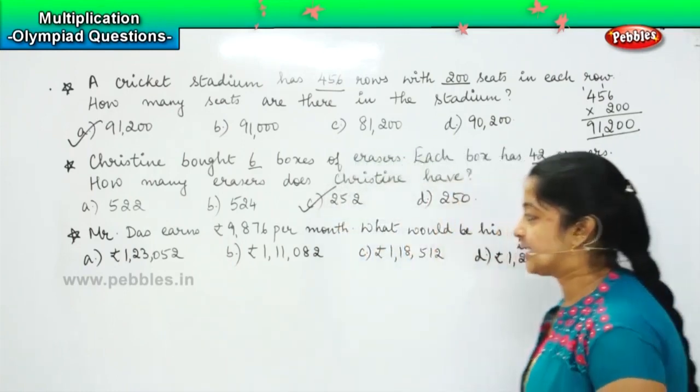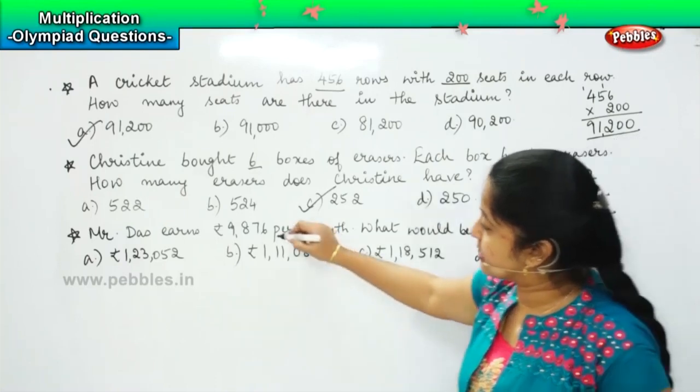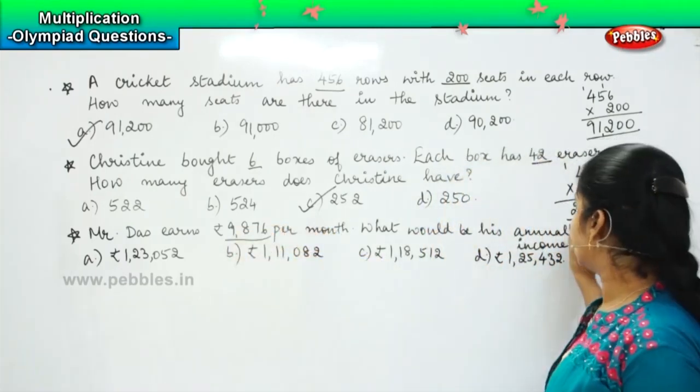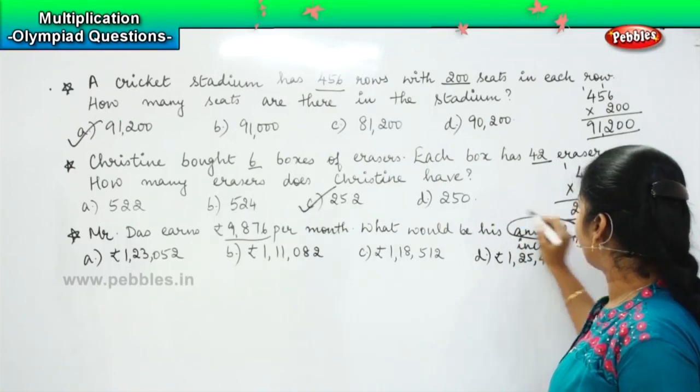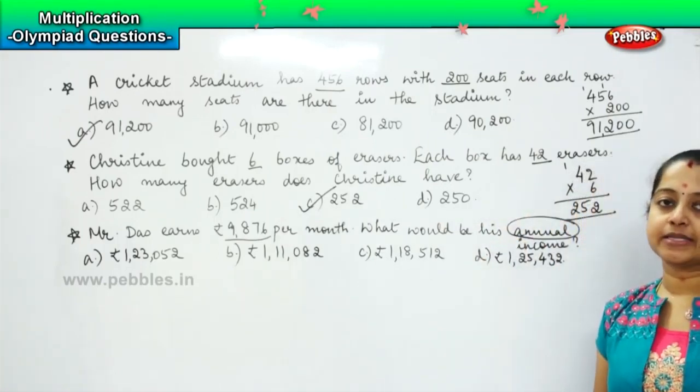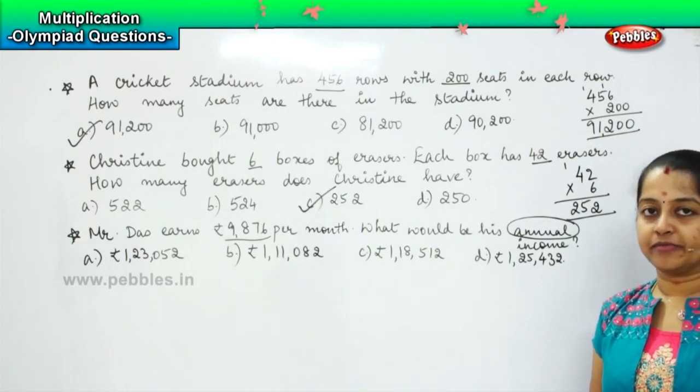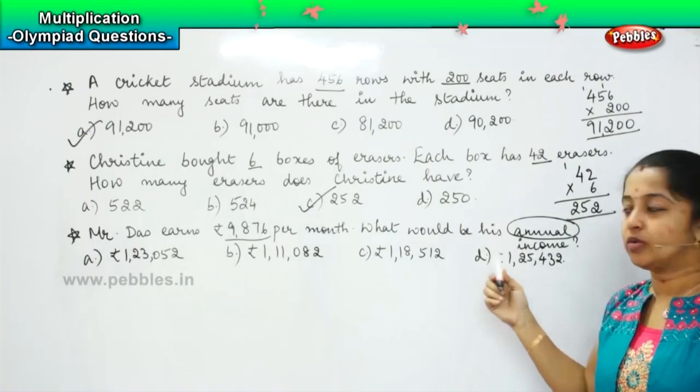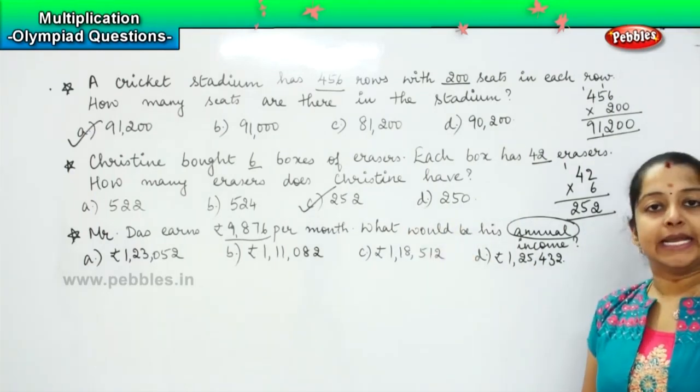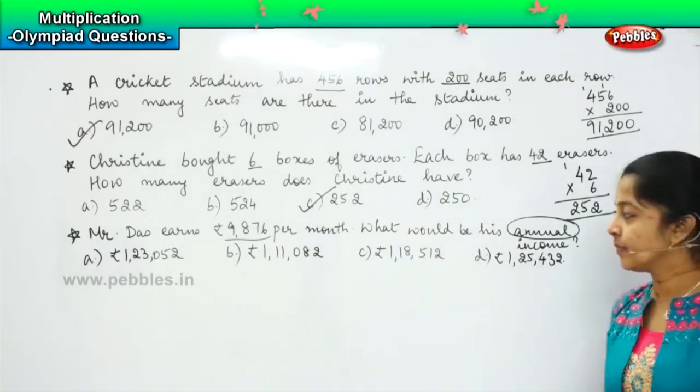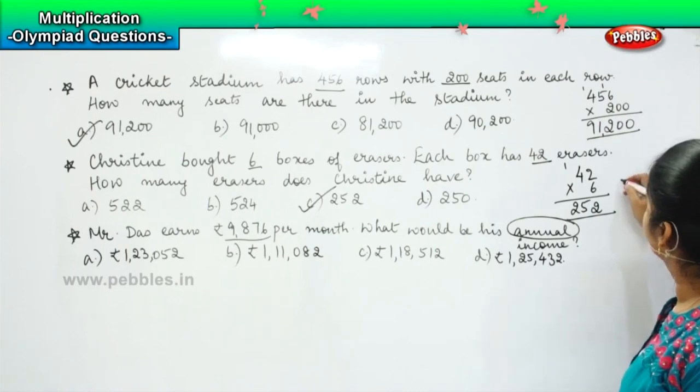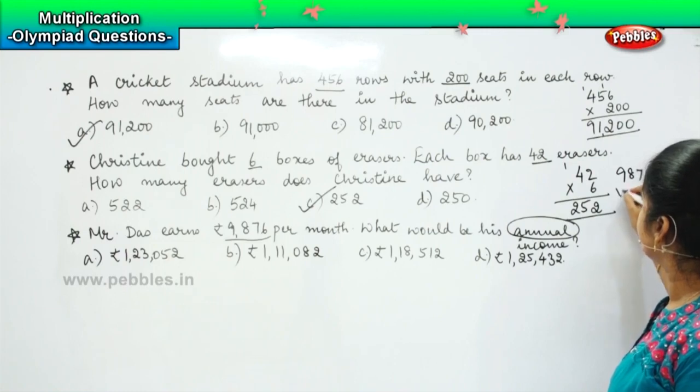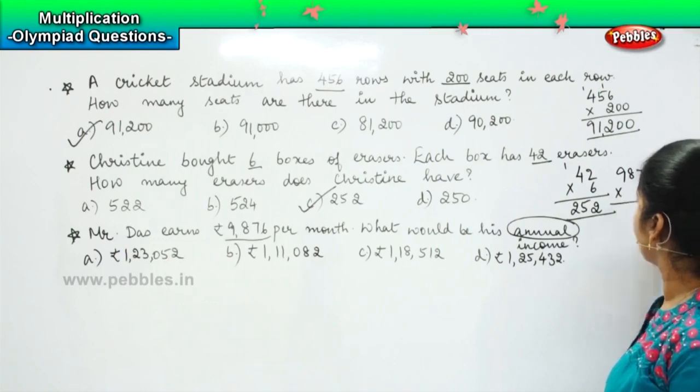Now the question is saying that Mr. Das earns so much per month. What would be his annual income? So what do you mean by annual, children? How many months are there in a year? 12, right? So here he is asking how much amount will Mr. Das earn in 12 months? So now we are going to multiply and see. 9,876 into 12.